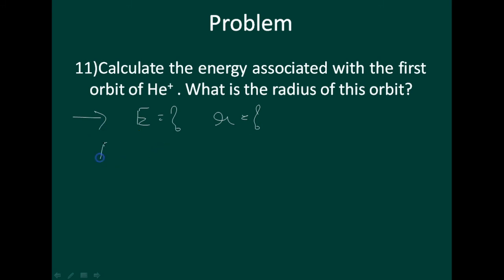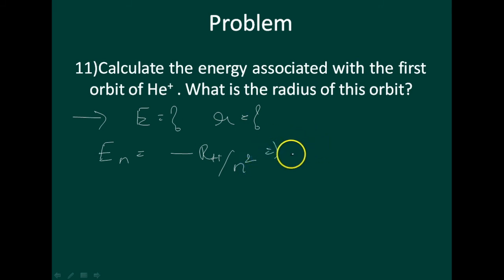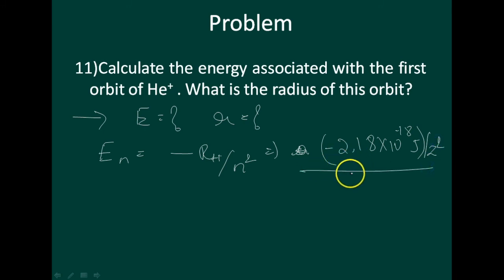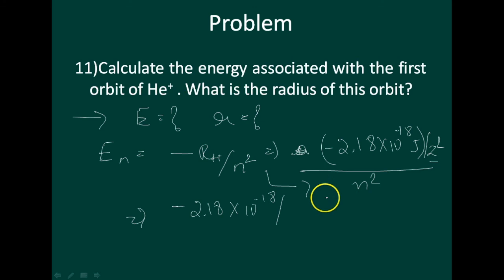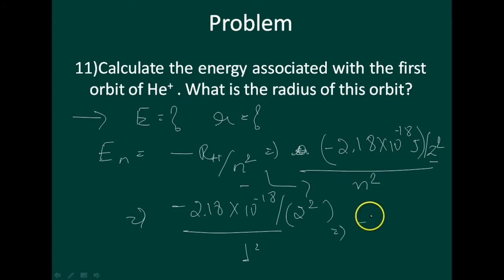For a stationary orbit, En equals minus RH times z squared divided by n squared, where RH is minus 2.18 into 10 raised to minus 18. For helium, the atomic number z is 2, so z squared is 4, and n is equal to 1. After calculation, the energy is minus 8.72 into 10 raised to minus 18 joules.